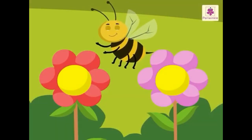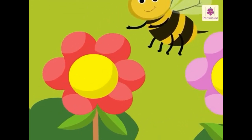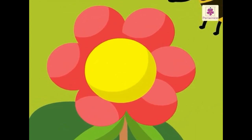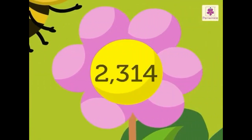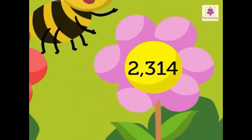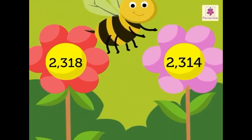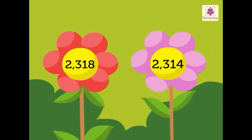Let us try one more example. Look at the numbers 2318 and 2314 on the flowers. Both the numbers have 2 in the thousands place.